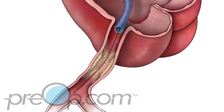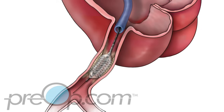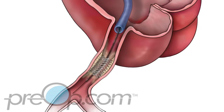If a stent is to be placed, a balloon with a wire mesh device is guided into the blockage. The balloon is filled, opening the artery and putting the stent into position. The permanent stent supports and holds the artery open after the balloon is removed.